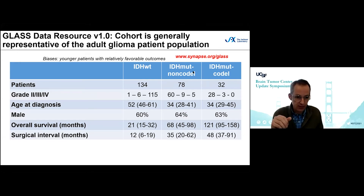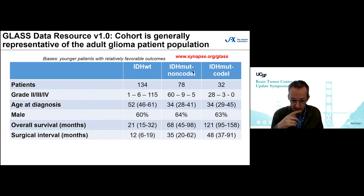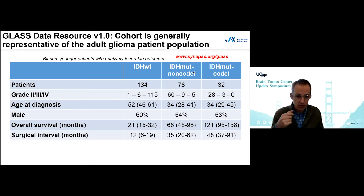In current GLASS efforts, we're trying to address the imbalance by increasing our efforts to obtain IDH mutant codel tumors. The patients in this cohort are generally a little younger than you would see in the typical population — this is likely because patients need to be able to undergo multiple surgeries to obtain the samples for molecular characterization. That also implies that outcomes for our cohort are a little better than typically seen, and we have pretty complete clinical data.